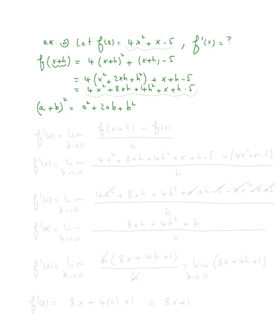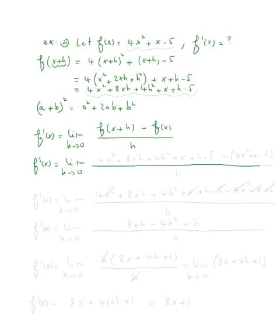Now let's calculate f prime of x. We need to write the definition. The definition says this is equal to the limit as h approaches zero of f of x plus h minus f of x, everything over h. So f prime of x equals the limit as h approaches zero, everything over h.